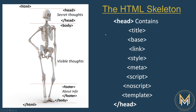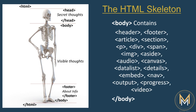The head can contain things like title, links, styles, and scripts. The body contains all the elements which are displayed on a web page when loaded in a browser. The tags that are in a body are, for example, paragraph tags, divisions, span, images, and we will talk about header and footer further along the course.